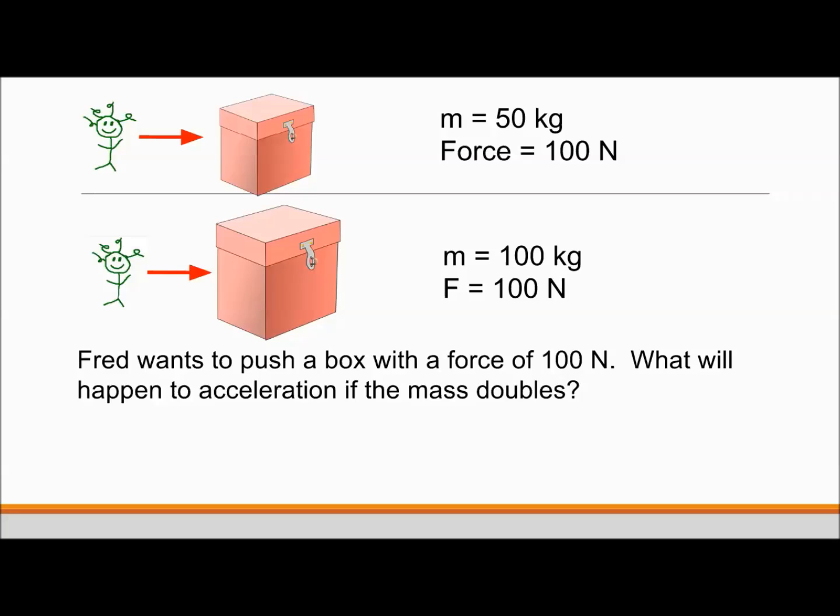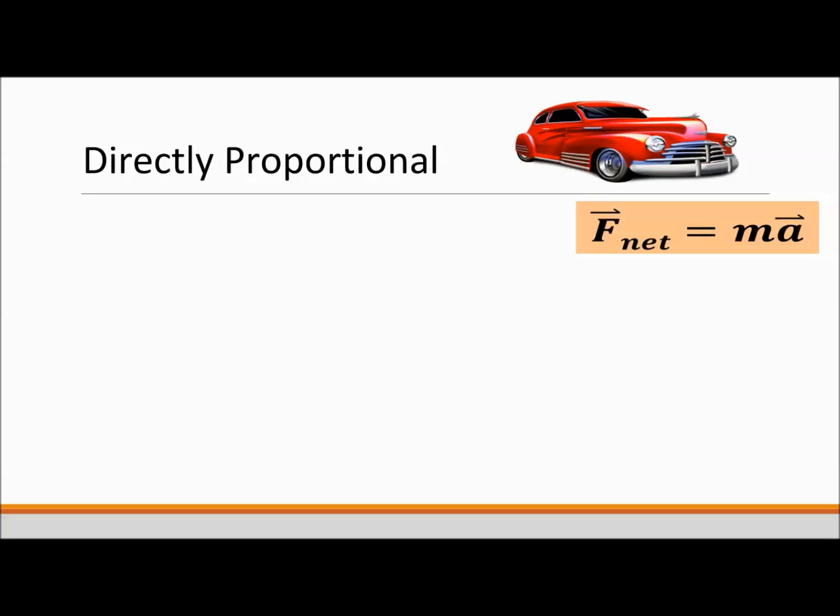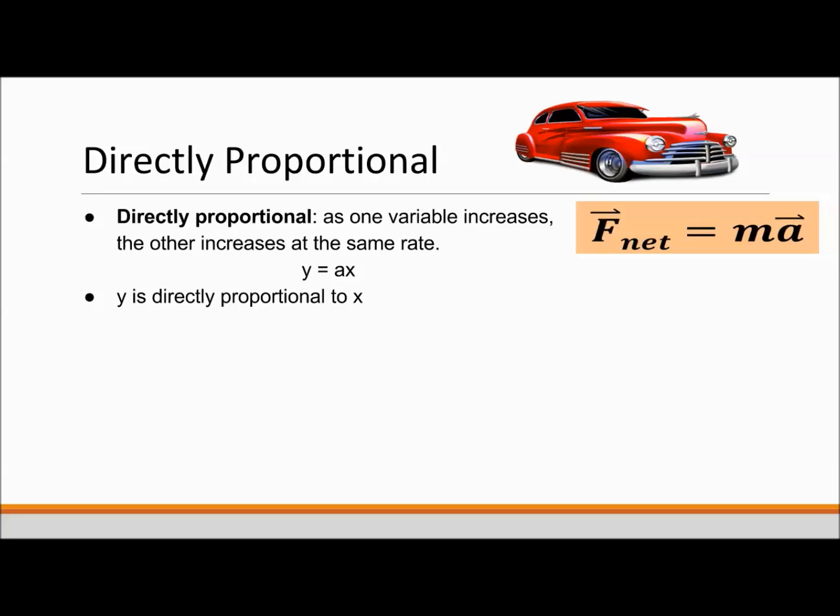Let's break down this equation by looking at relationships between the variables. First, relationships can be directly proportional. Directly proportional means as one variable increases, the other increases at the same rate. For example, if y is equal to a, which is a constant, times x, y is directly proportional to x. x is also directly proportional to y.